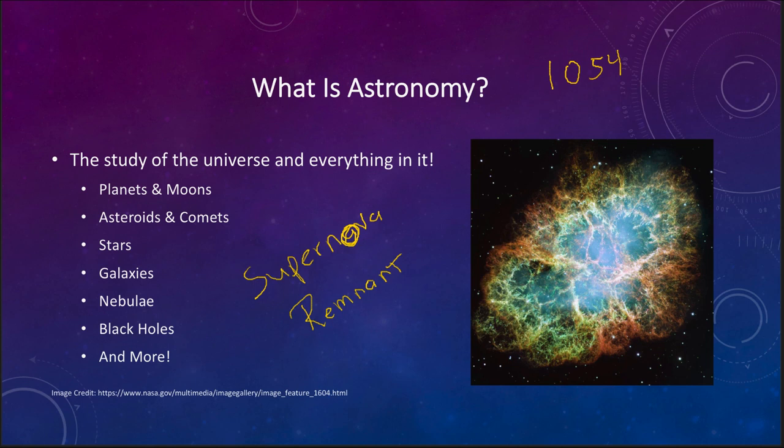At the center of this nebula is a neutron star — the collapsed core of the star left behind. It has several times the mass of the Sun, yet the size of a city, maybe about six miles across, compacted down to extremely dense levels. It is not quite a black hole, but very close to it — something we call a neutron star.